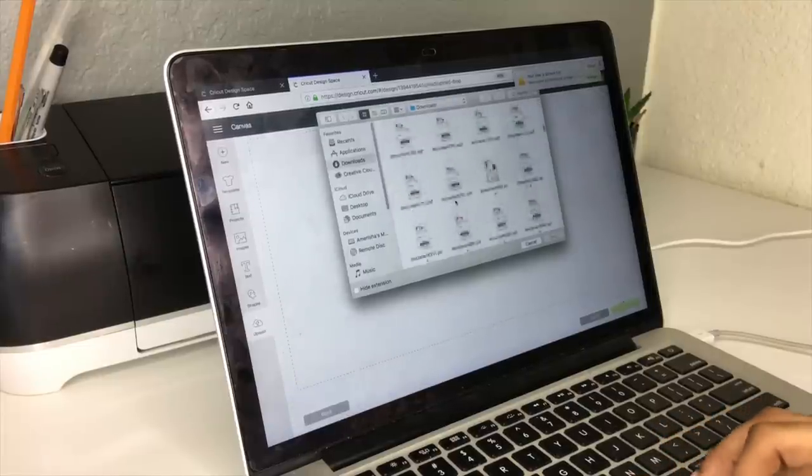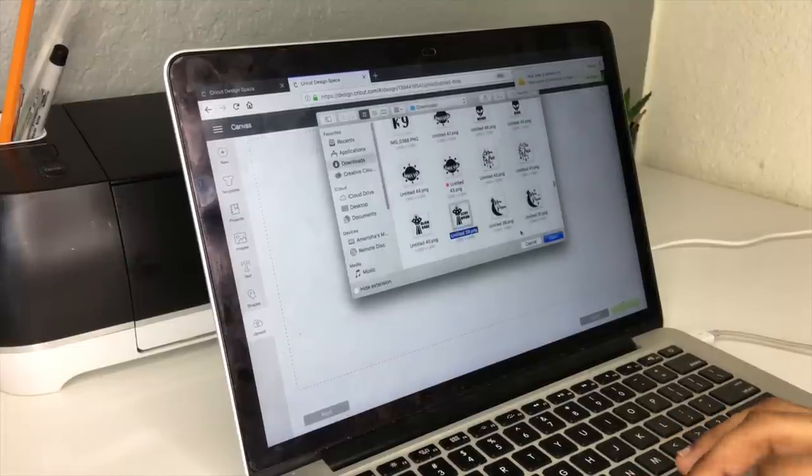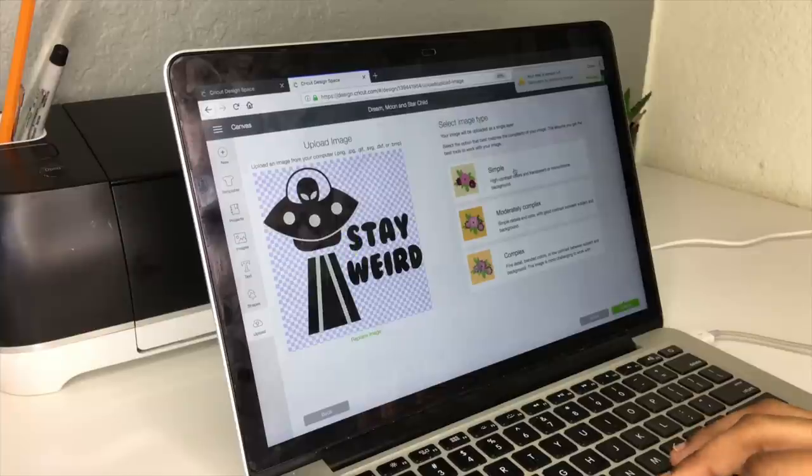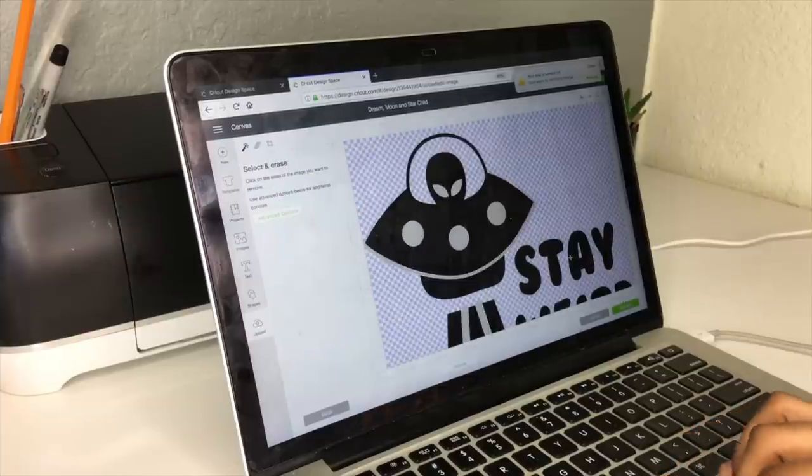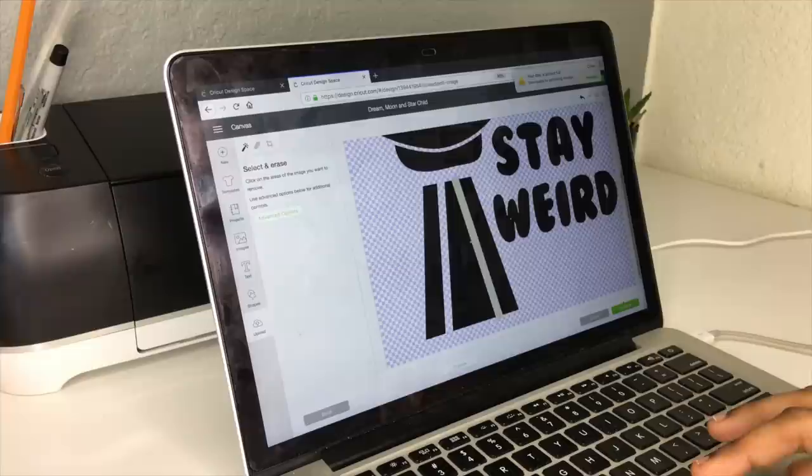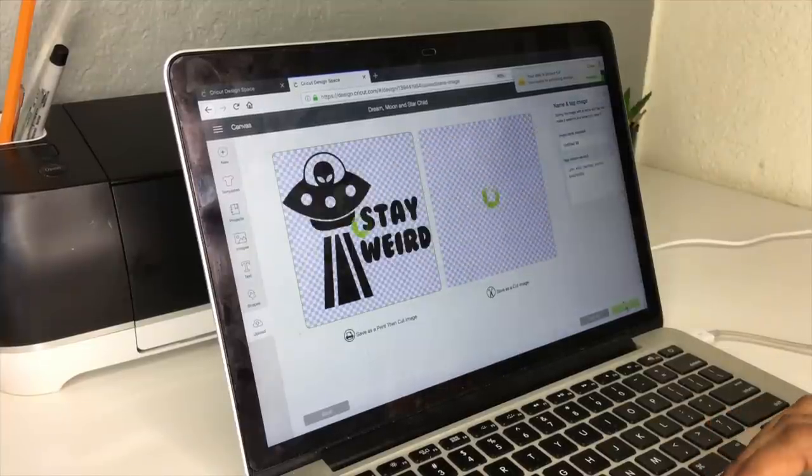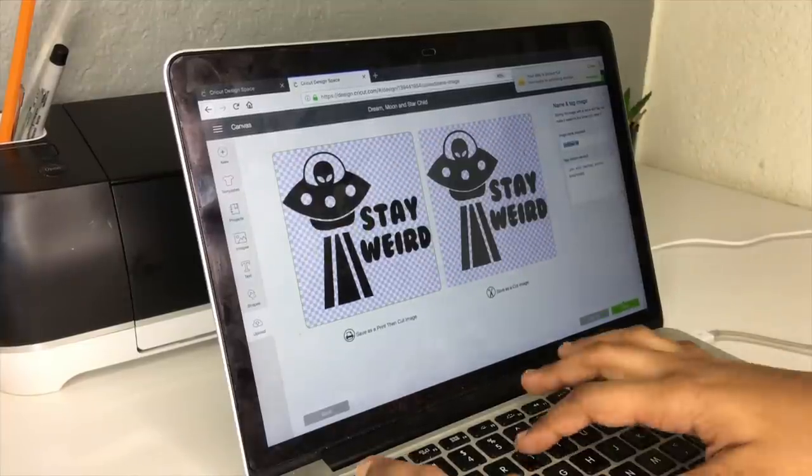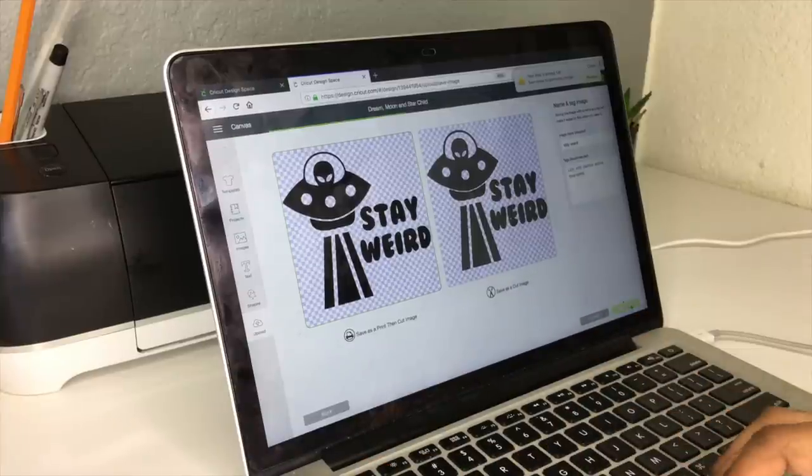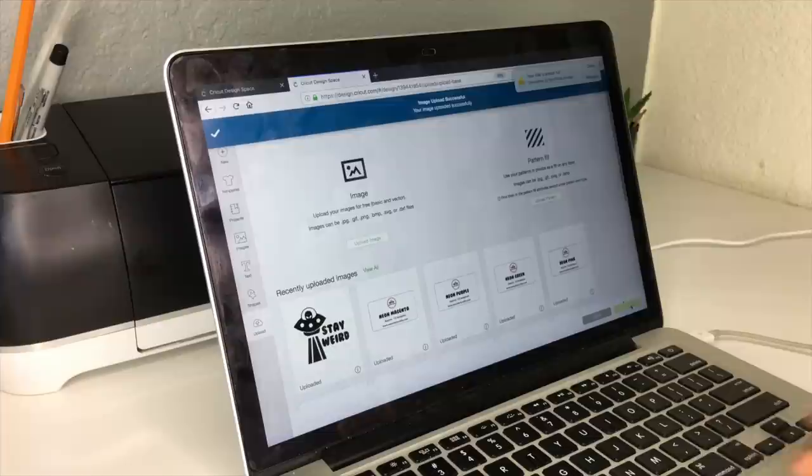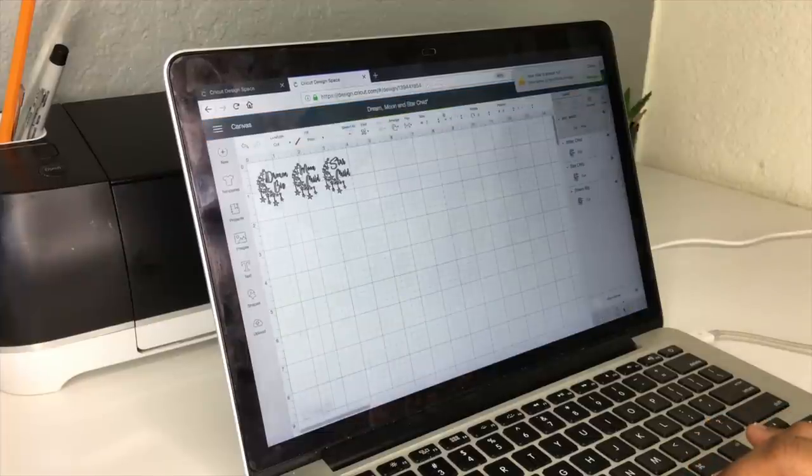After designing my stickers, I'm going to upload them to Cricut Design Space, and I'm going to make sure I click the simple option. I'm going to use the erase magic tool just to get rid of anything that I don't want cut, and I'm going to make sure that I save my design. Then I'm going to resize it to the size of the mold and get everything ready for it to be cut out.